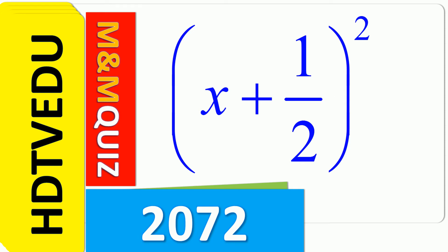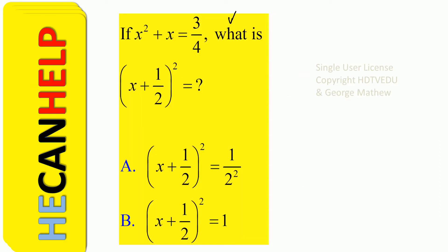x plus one half, the whole squared. Math quiz 2072: if x squared plus x equals 3 over 4, what is x plus one half, the whole squared? Is it A or is it B?